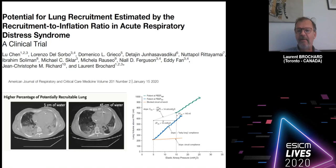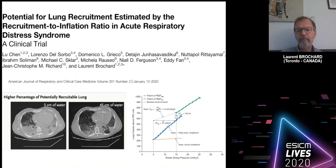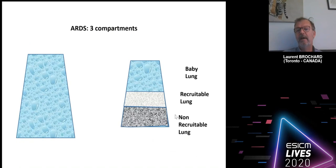When you perform multiple pressure-volume curves and the lung is recruitable, you see that for the same pressure in the system you have more volume — which is exactly what we have in mind when we say we want to recruit. We want to return to the same pressure and have more volume in the system.